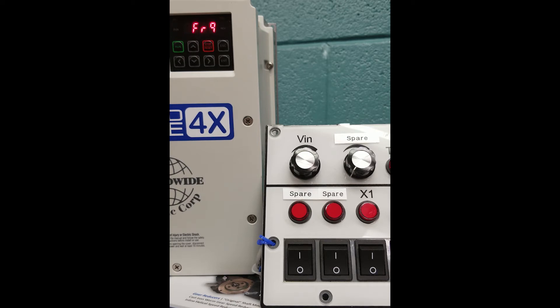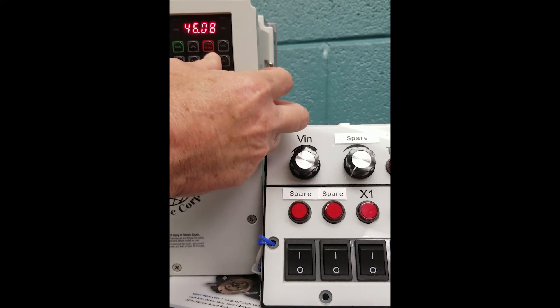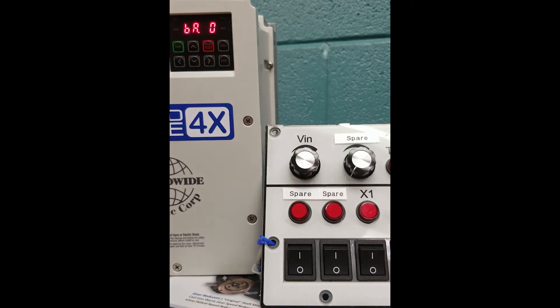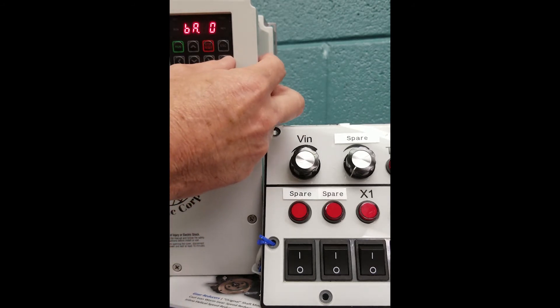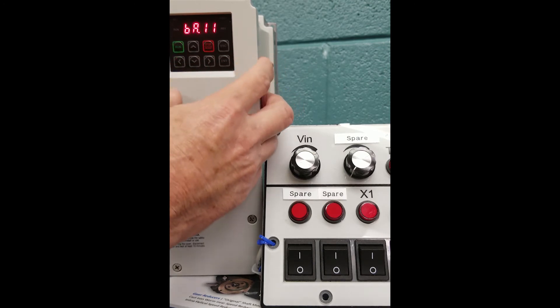Now we must go set our motor information into the VFD. We will do this by simply pushing the right arrow until we get to our BA parameters. We got BA. Please look at your instruction manual. We're going to go to BA 11, and this is going to bring us up to our motor poles.